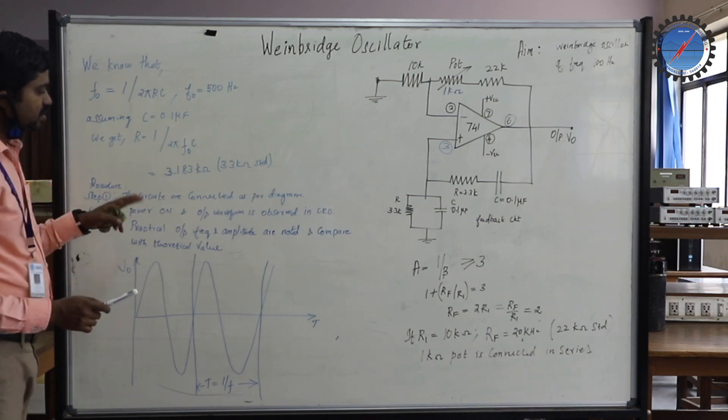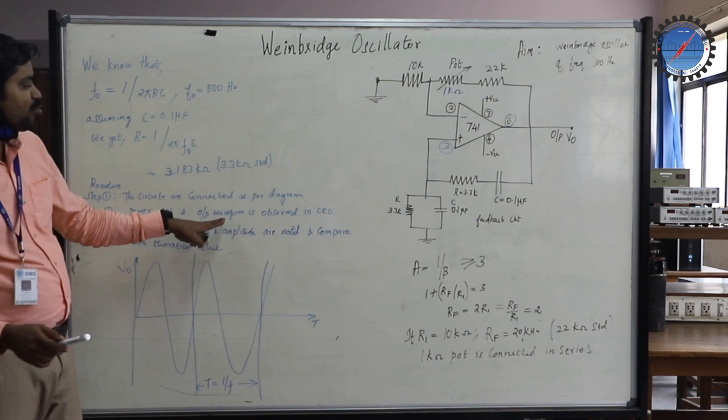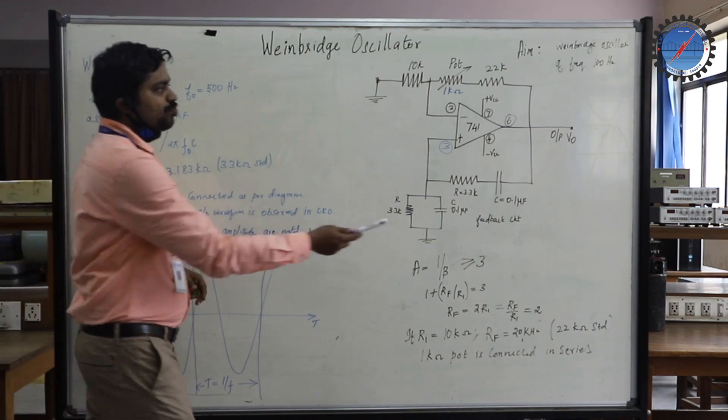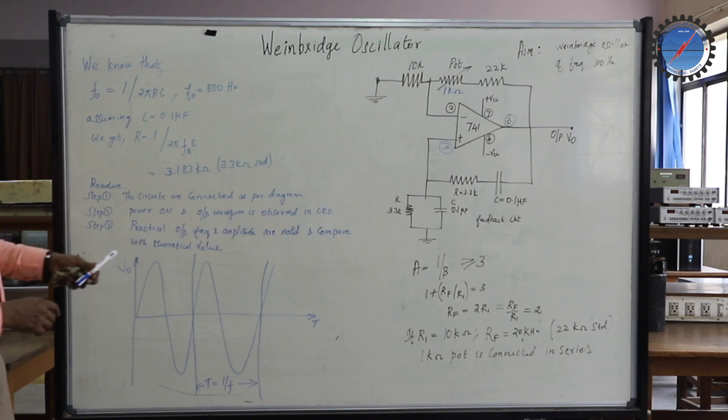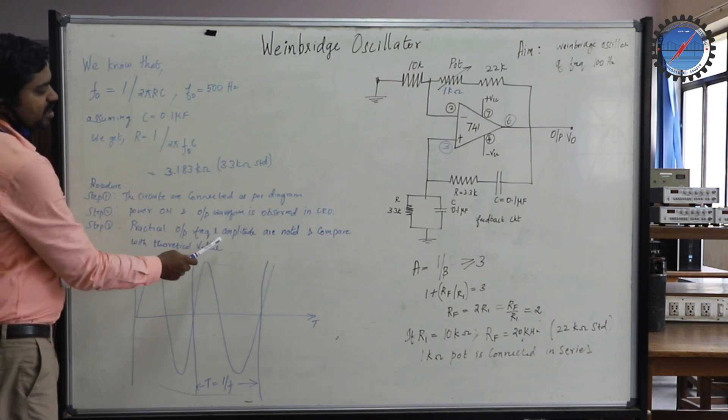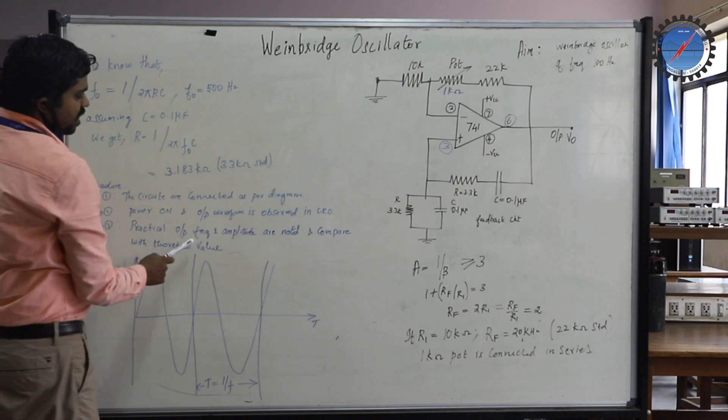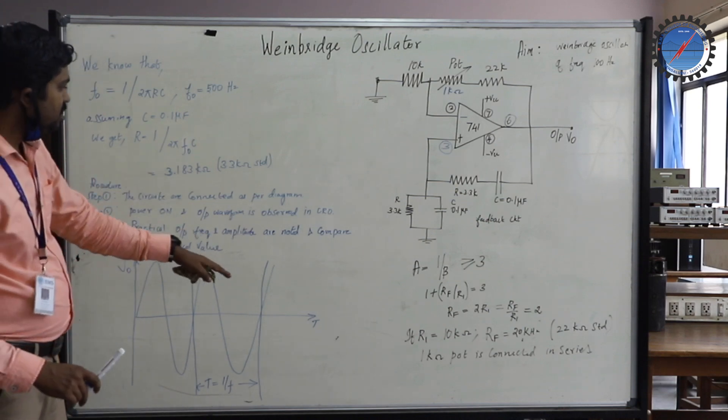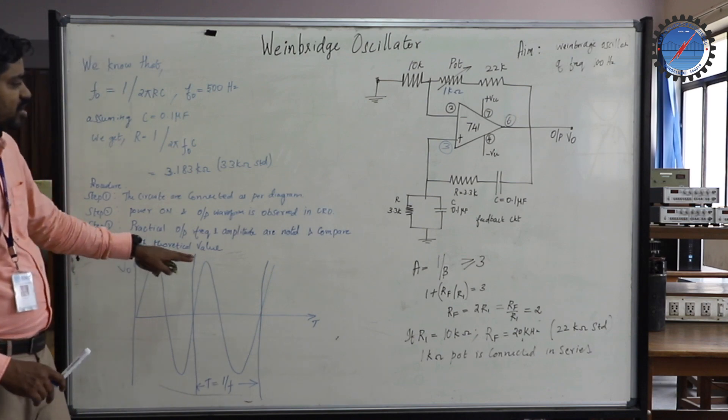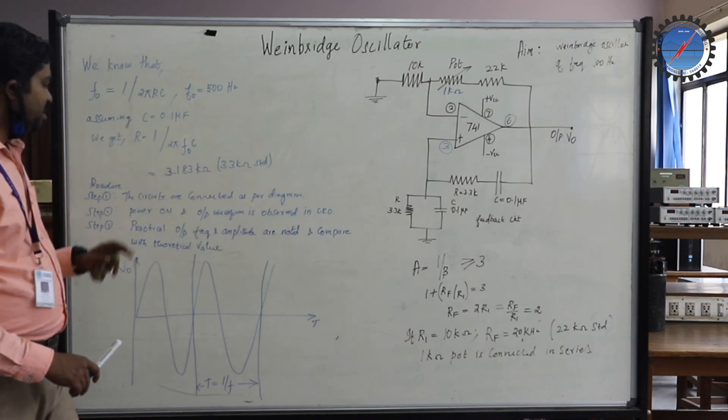Step 2: power on. Power on the supply and the output waveform is observed in the CRO. Step 3: practical output frequency and amplitude are noted in the scope and then compared with the theoretical values.